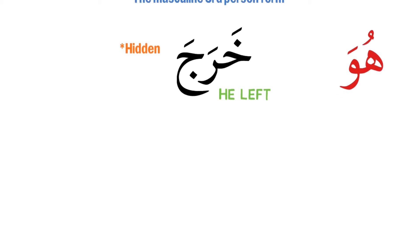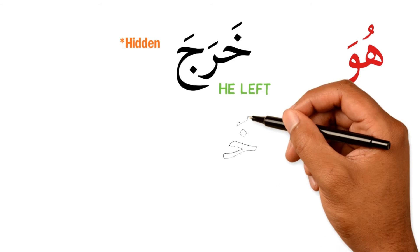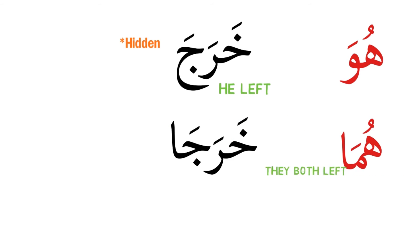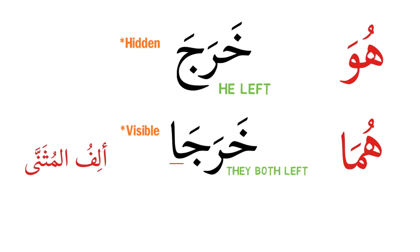The next in sequence for the pronouns is هما, which means 'they two.' We say خرجا, meaning two people left — they both left. Where is the فاعل here? In this case it is the alif, so it's not hidden, it's actually visible. The alif represents a ضمير, or pronoun, which is هما. In Arabic we call this alif المثنى, which is the alif of the dual form.